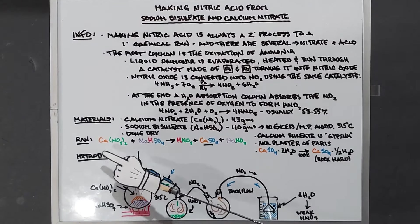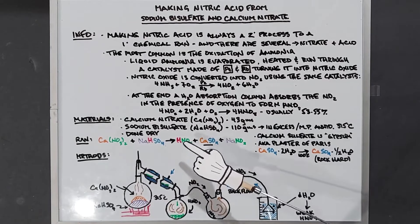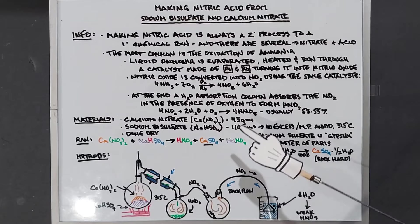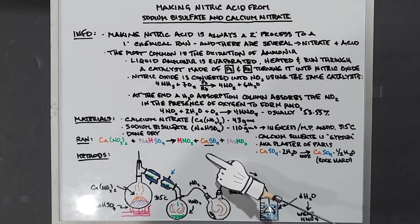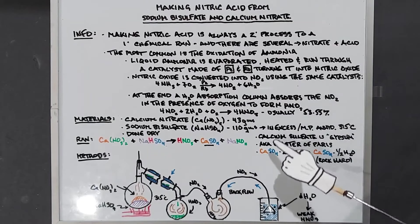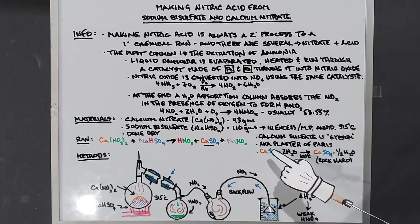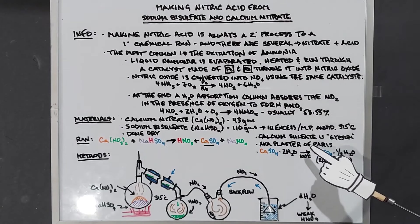The reaction is as follows: calcium nitrate plus sodium bisulfate yields nitric acid plus calcium sulfate plus sodium nitrate. The calcium sulfate is known as gypsum. It is naturally occurring and also known as plaster of Paris.